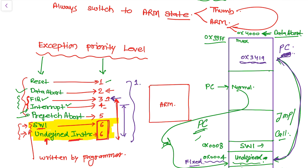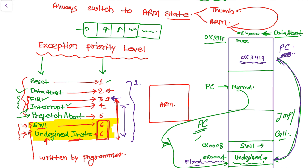The Prefetch Abort exception occurs when an attempt to fetch an instruction results in a memory fault. This exception is raised when the instruction is in the execute stage of the pipeline. As discussed previously, the pipeline stages include Instruction Fetch, Instruction Decode, Instruction Execute, Memory, and Write Back — the Prefetch Abort occurs at the execution stage.